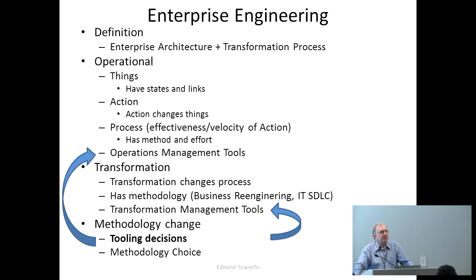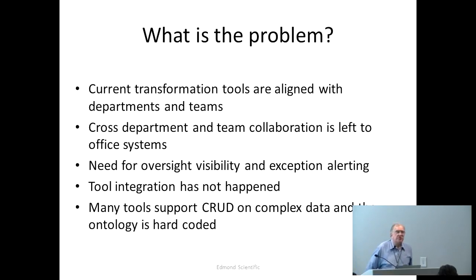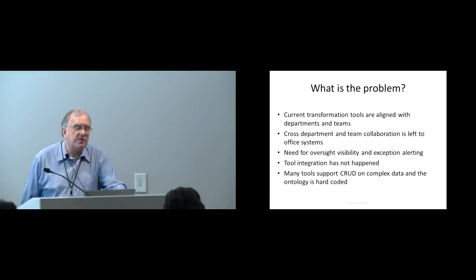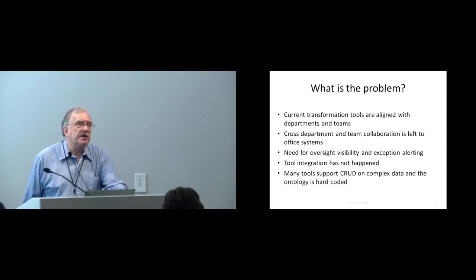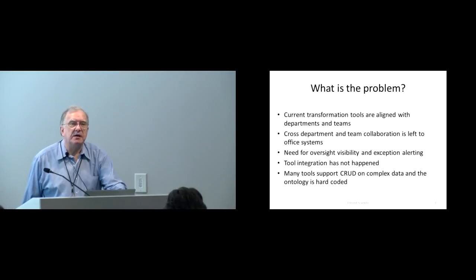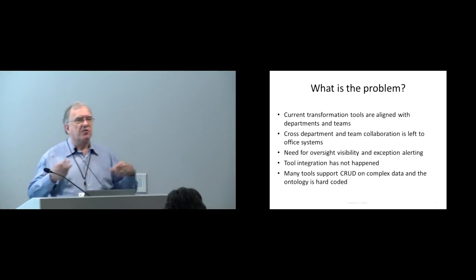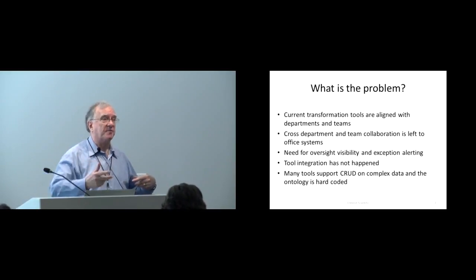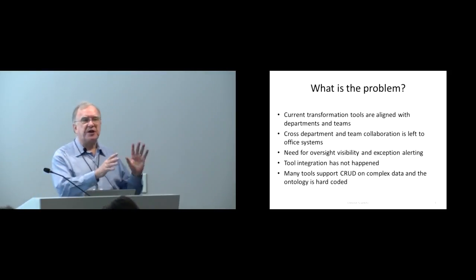The tooling decision is interesting because it's got a lot of problems. Current transformation tools are aligned around departments and teams — project management tools, architectural tools, sharing tools like SharePoint, which are office systems. Cross-department and team collaboration is left to office systems, so we're trying to do all this coordination with emails and many meetings. In the development lifecycle, with Scrum and Agile, you've got scrums, then scrum of scrums — I've actually seen a scrum of scrum of scrums — and you can imagine what happens to your calendar.